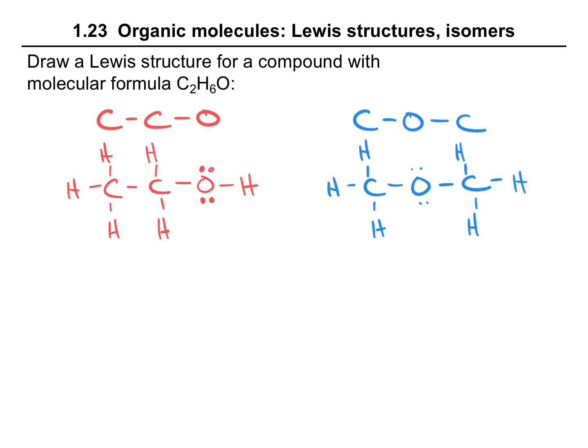So these compounds that we have here, these are examples of isomers. Isomers would be a pair of compounds that have the same molecular formula, but are different compounds.